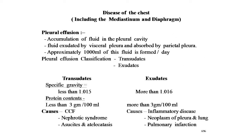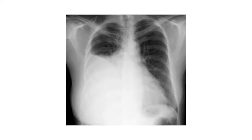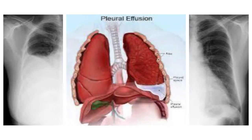Diseases of the chest — pleural effusion: accumulation of fluid in the pleural cavity. Fluid is exudated by the visceral pleura and absorbed by the parietal pleura; approximately 1000 ml is formed per day. Classification: transudate — specific gravity less than 1.015, protein less than 3 g/100 ml, causes include CCF, nephrotic syndrome, ascites, and atelectasis; exudate — specific gravity more than 1.016, protein more than 3 g/100 ml, causes include inflammatory disease, neoplasm of pleura and lung, and pulmonary infarction. Here are images showing right-side and left-side pleural effusion.